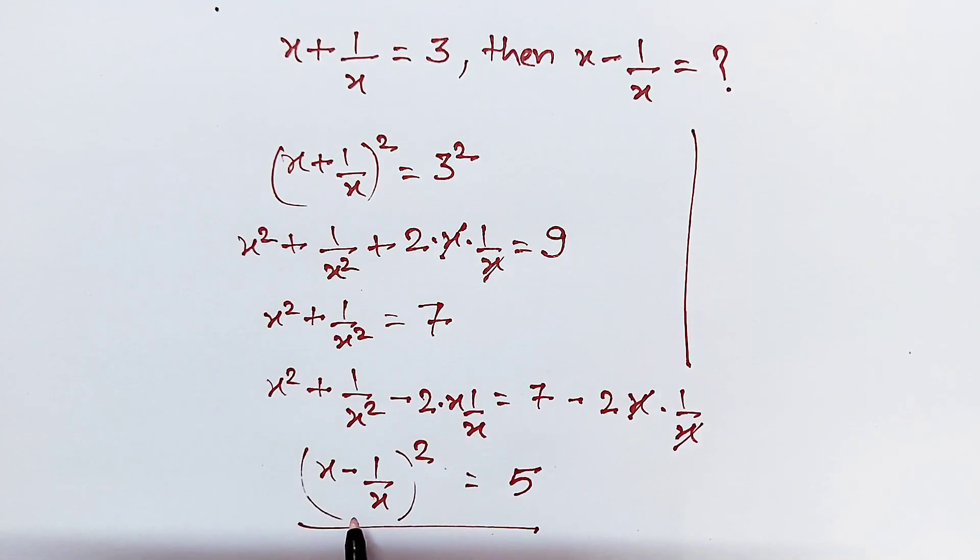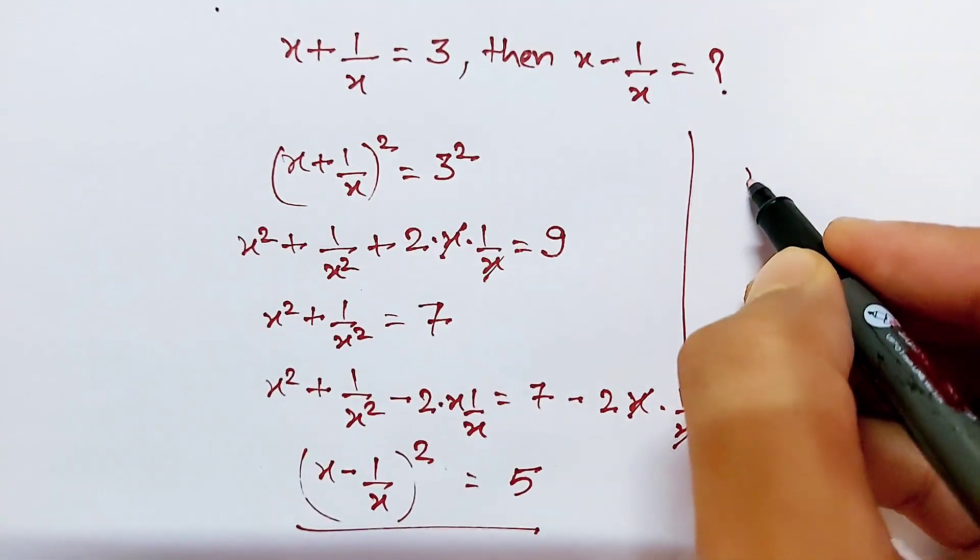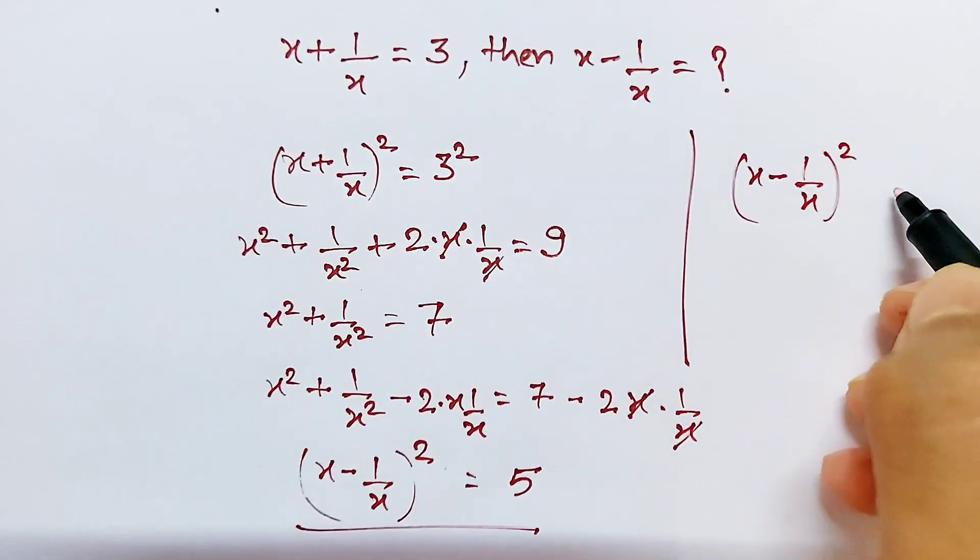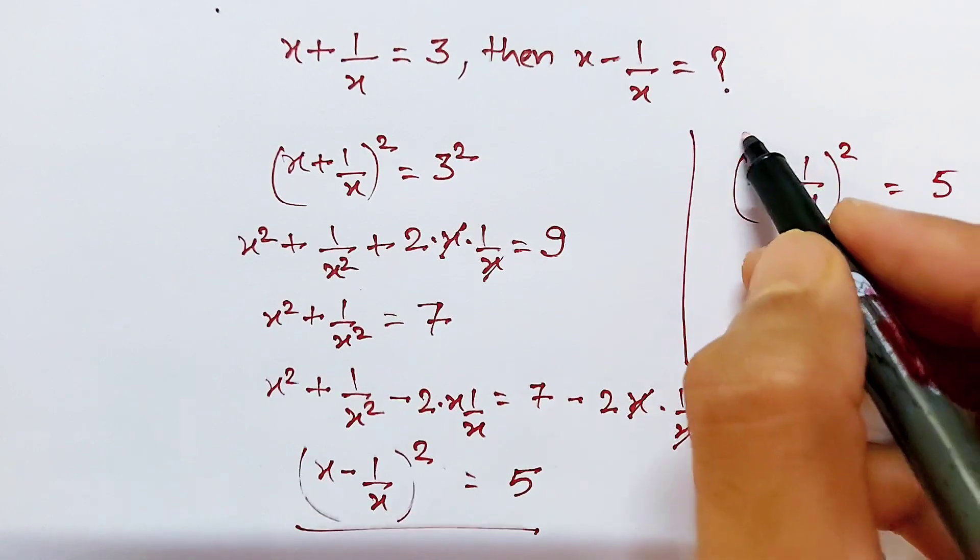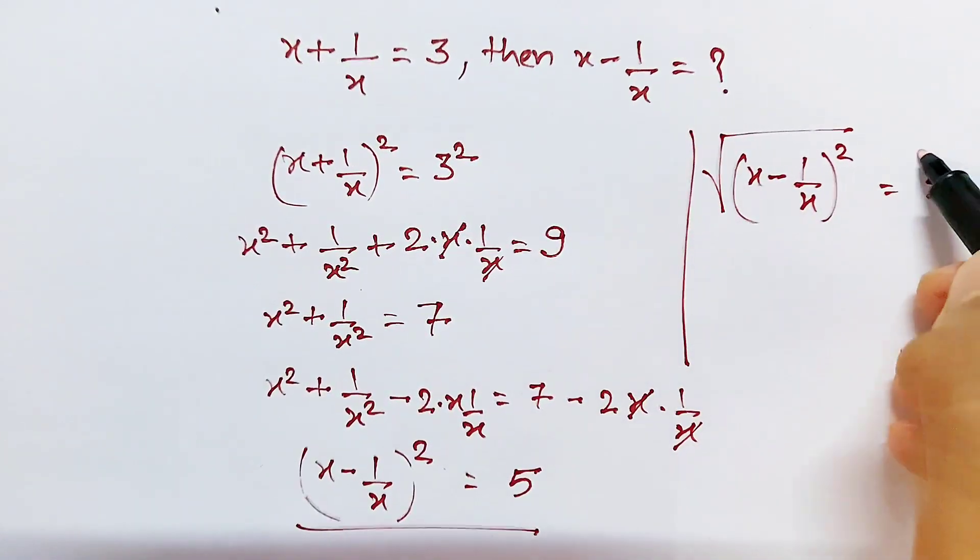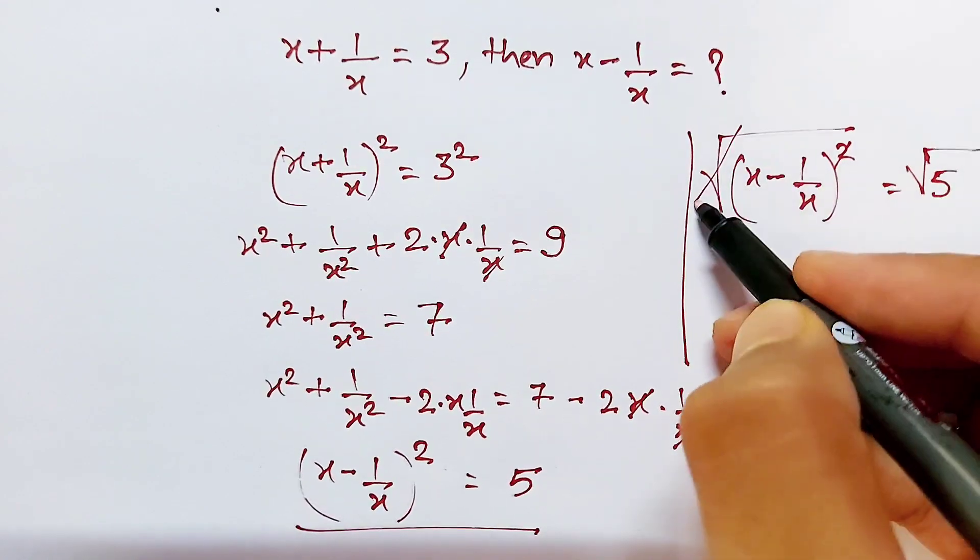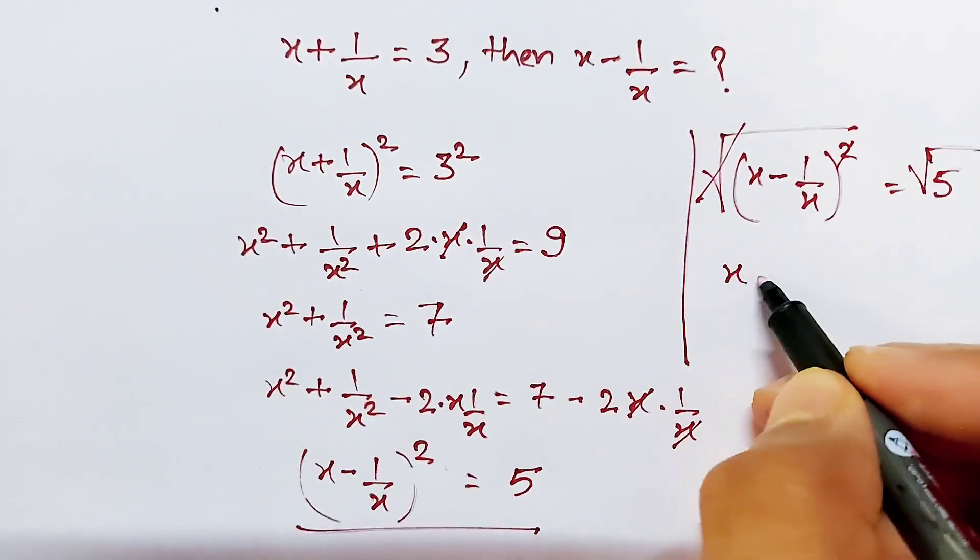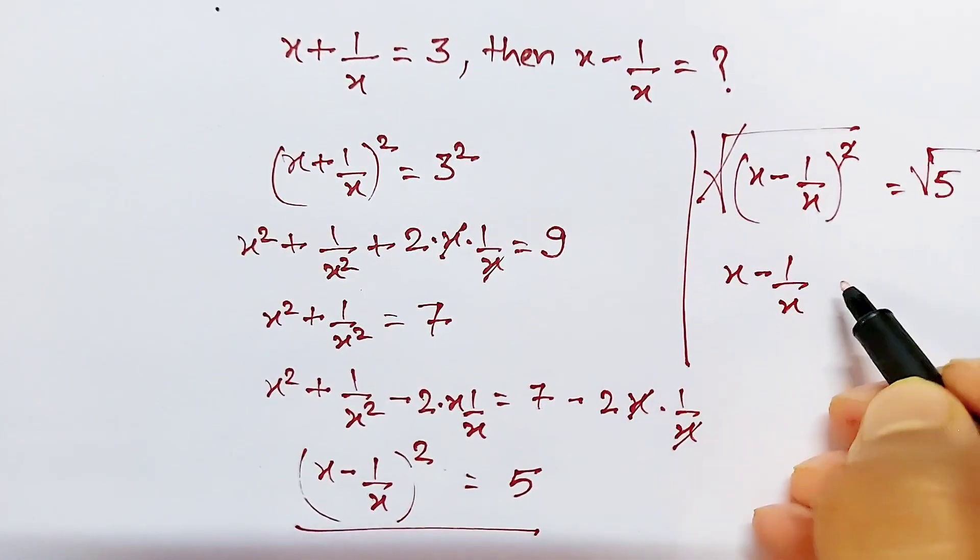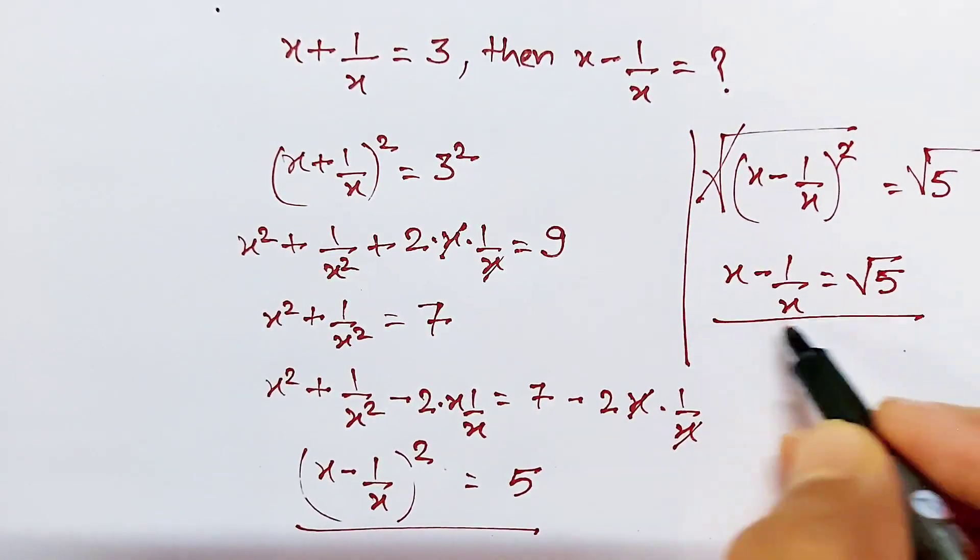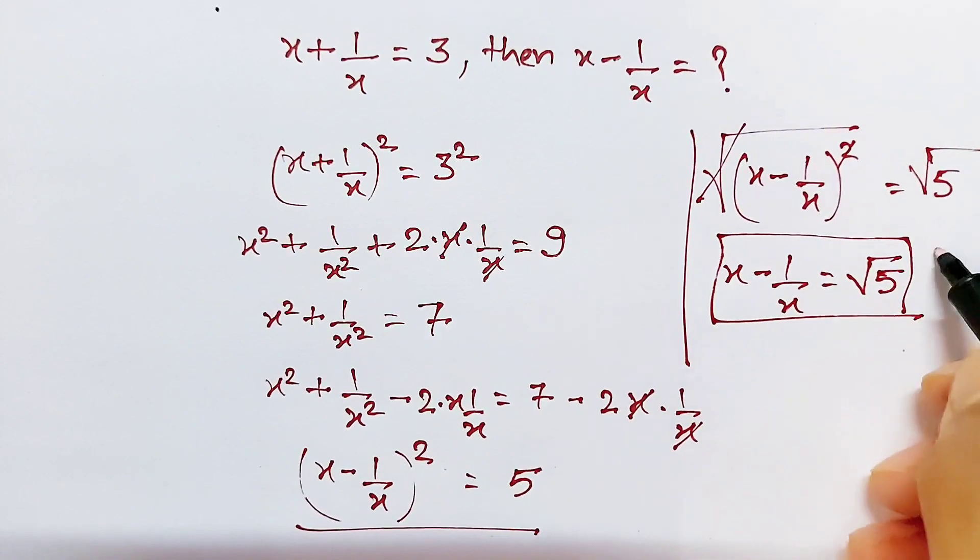Taking the square root of this equation, taking square root on both sides, this square cancels out this square root. And x minus 1 over x equals square root of 5, and that is our final answer.